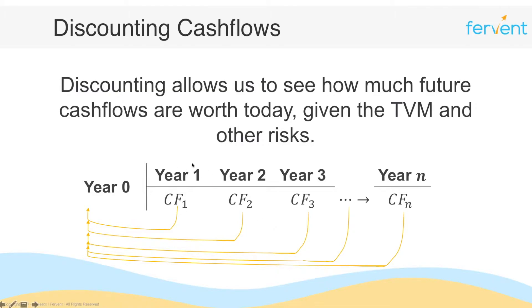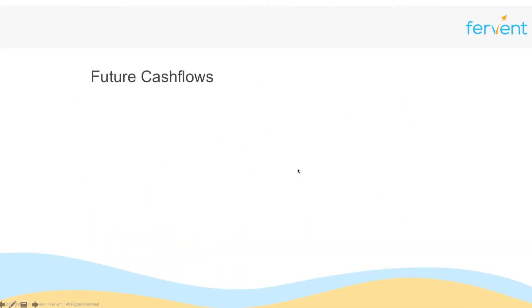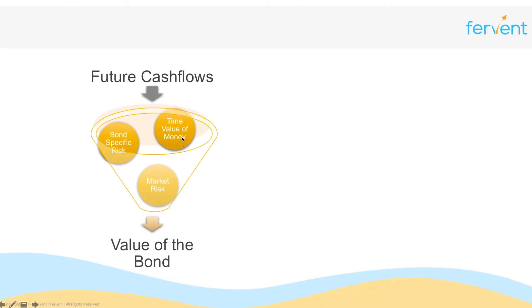In the context of bonds, rather than having a generic cash flow, we have coupons C earned in year one, then another coupon in year two, and so on until the nth year, where you'll get the final coupon as well as the par value. At a process level, we're doing exactly the same as before — discounting each coupon and the par value back to year zero. Whatever future cash flows the bond generates, we incorporate bond-specific risk, the time value of money, and market risk. Once we've discounted those cash flows back to the present, we end up with the value of the bond.